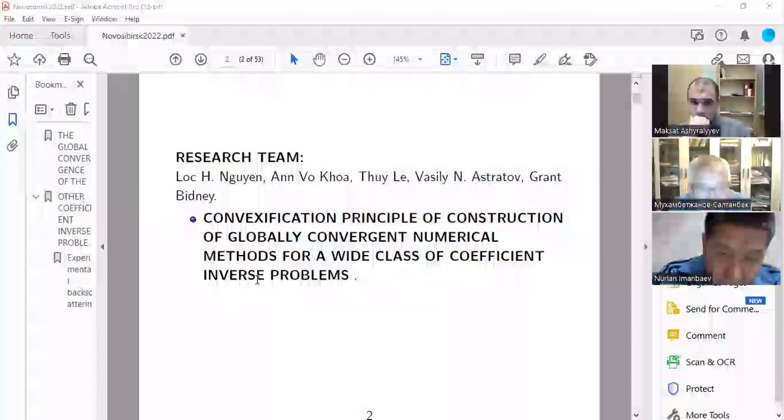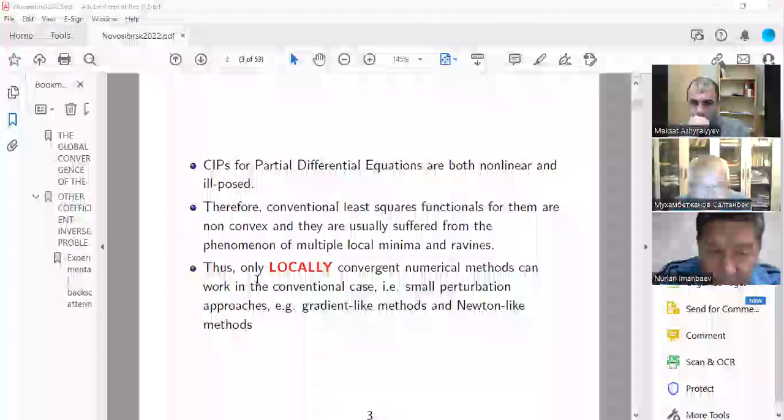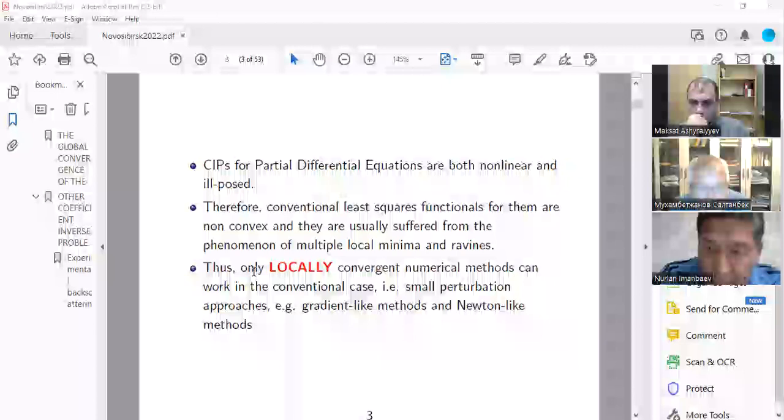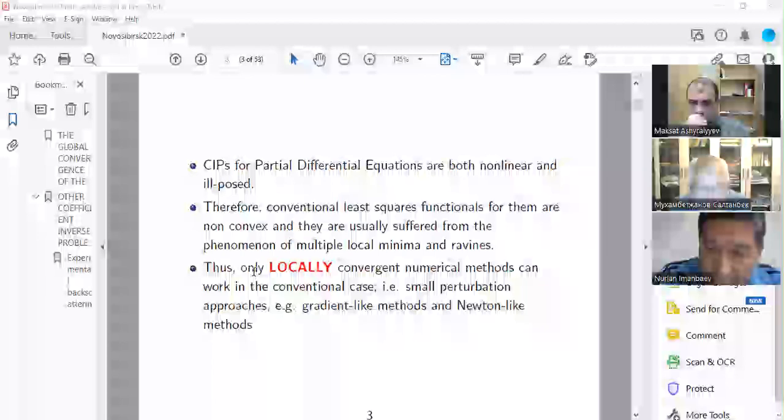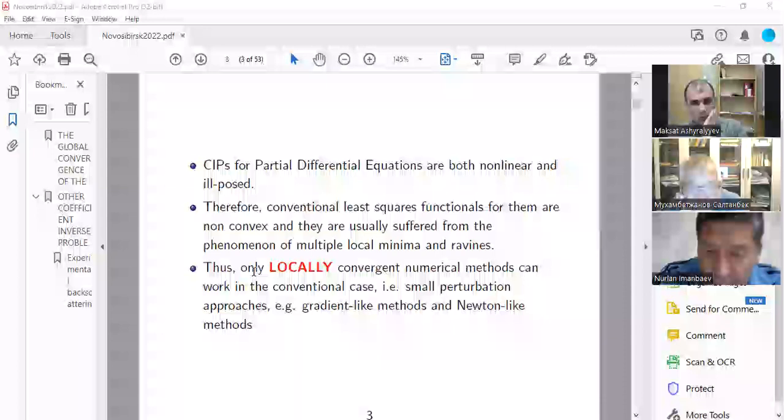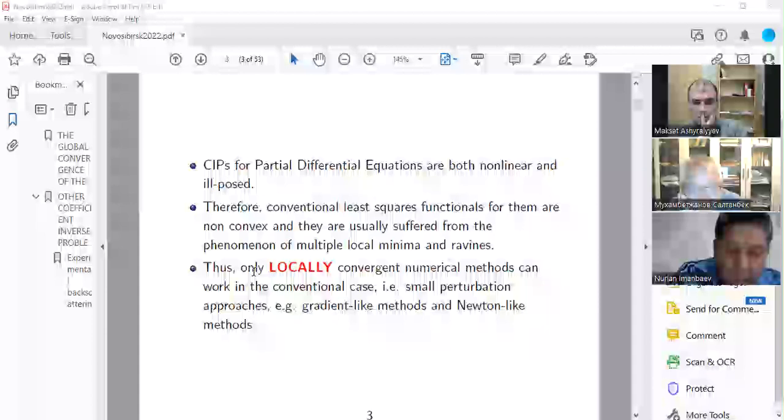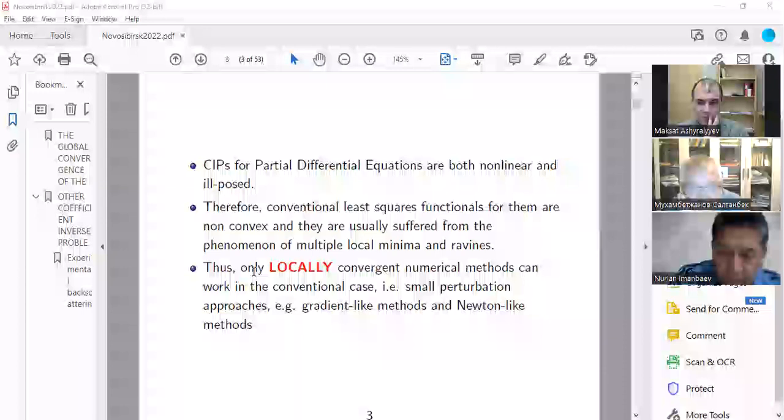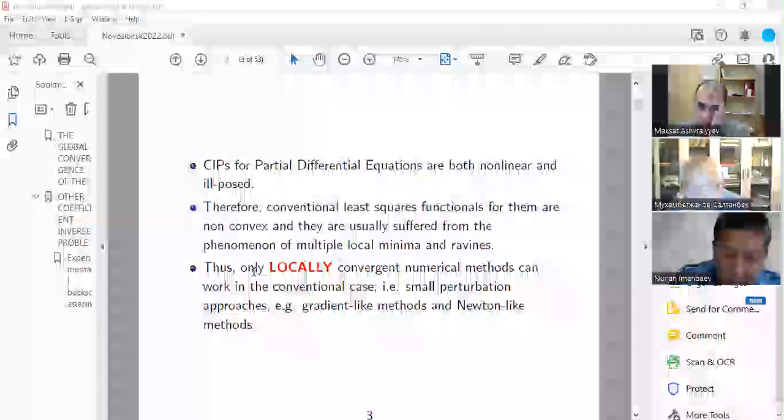The problem is that coefficient inverse problems, I call them CIPs by abbreviation, they are all nonlinear and ill-posed. It's unstable. This means that if you construct a conventional least squares functional to solve numerically, then you suffer from the problem of local minima and valleys. Everyone knows this, but since except of my group, nobody is using this technique, then basically they publish something but there are many questions. Where do you take the first guess? How stable are you with respect to first guess?